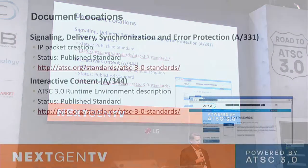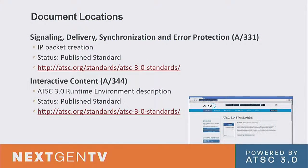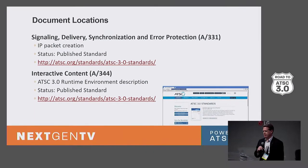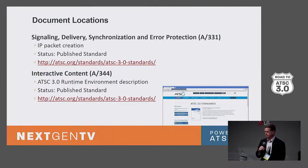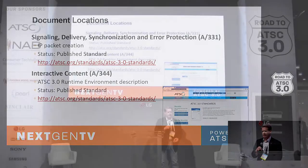For addressable advertising, there are two main standards I'd like to call out: A331 and A344. Please feel free to take a picture — I've given the URLs where those documents are located. They're available today and open for public viewing. The A331 signaling is for IP packet creation, and A344 is for the runtime environment.